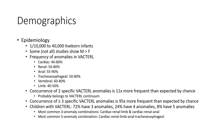In children with VACTERL: 72% have three VACTERL anomalies, 24% have four VACTERL anomalies, and 8% have five anomalies. Most common three-anomaly combination: cardiac, limb, and anal. Most common five-anomaly combination: cardiac, adrenal, limb, anal, and tracheoesophageal.